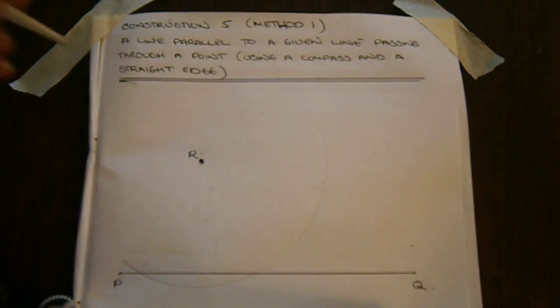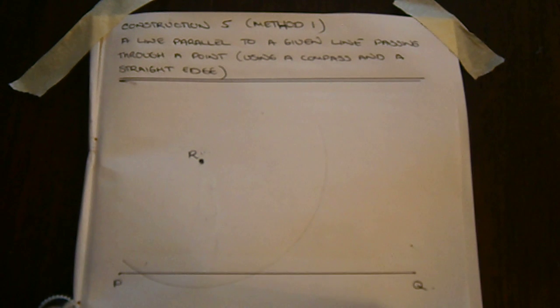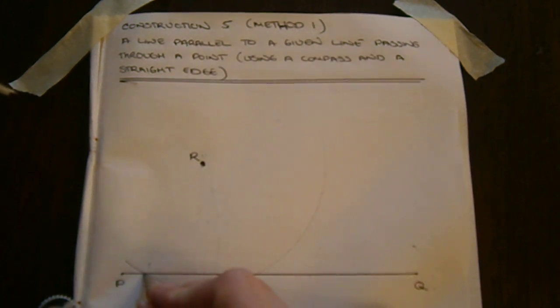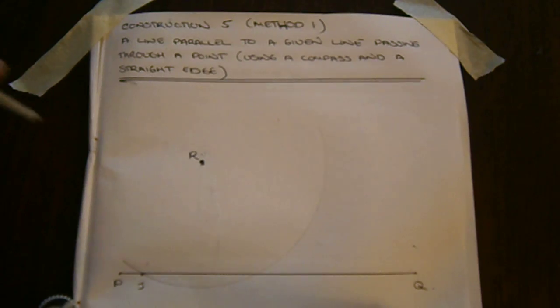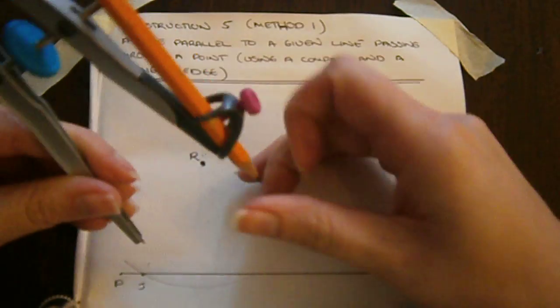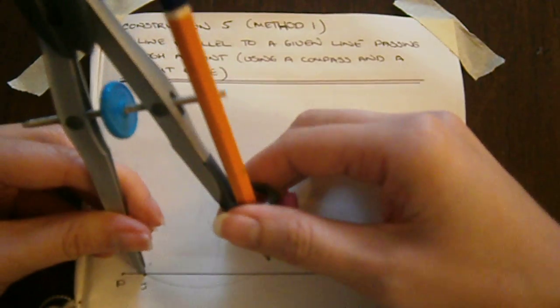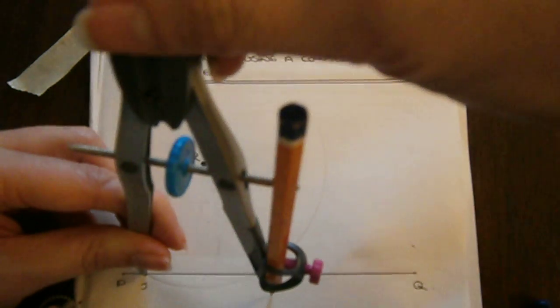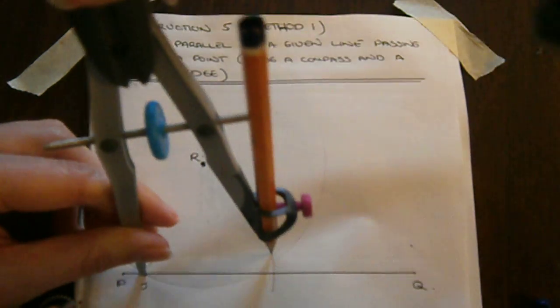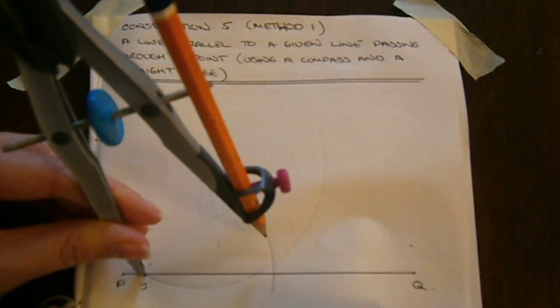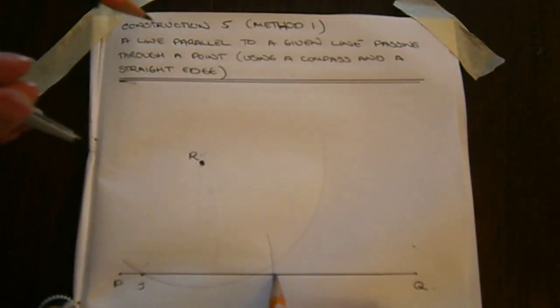We keep the compass the same length and label our first intersection point here, let's call it J. Putting the point of the compass on point J, we swing another arc through the line PQ. We label this point, let's call it E.